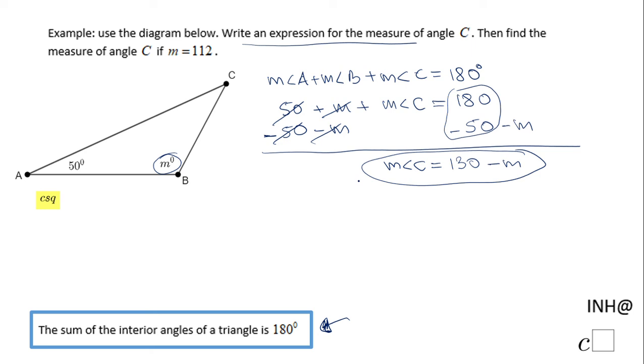The second part asks us to find the measure of angle C if M is 112. So this is a special case. The measure of angle C will be 130 minus 112. Since we already have this expression we just plug it in, so it will be 18 degrees.